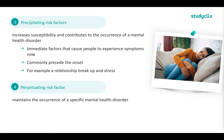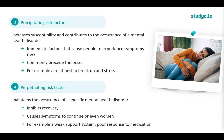Perpetuating, on the other hand, maintains the occurrence of a specific mental health disorder. This is what inhibits your recovery and helps to cause symptoms to continue or even worsen. These can include things such as a weak support system and a poor response to medication. So to recap: predisposing is before it occurs; precipitating is what makes it start; and perpetuating is what keeps it going. Protective, on the other hand, is what helps to safeguard you against these three risk factors.